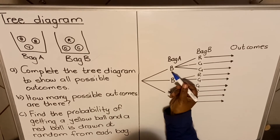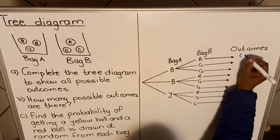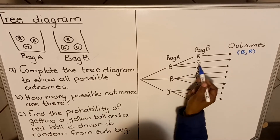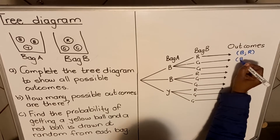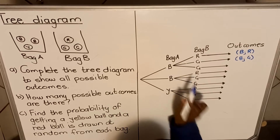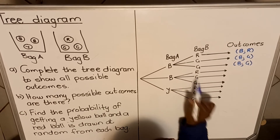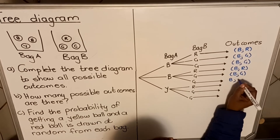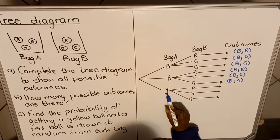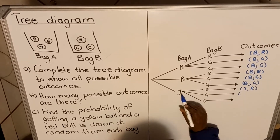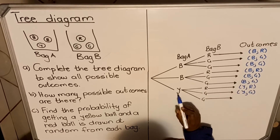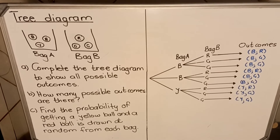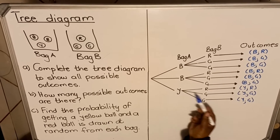You could have a blue ball then a red one — so the outcome is blue, red. You could have blue then green — outcome is blue, green. And blue then green again — blue, green. From the second blue branch: blue, red; blue, green; blue, green. Then from the yellow branch: yellow, red; yellow, green; yellow, green. This is how you write your outcomes depending on the combination you have.